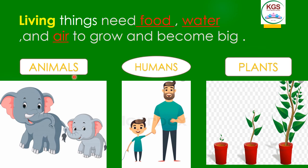Those are living things — animals, humans, plants. Look at this small elephant. This one is the small one and this is the big one. It received food, water, and air to grow.